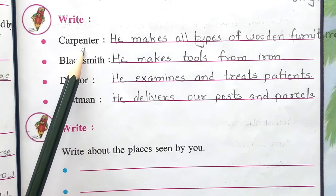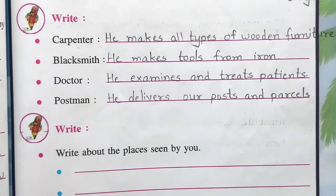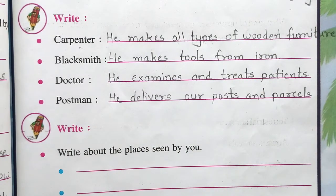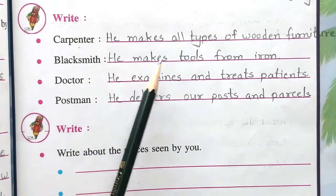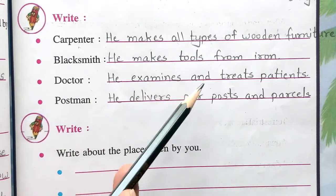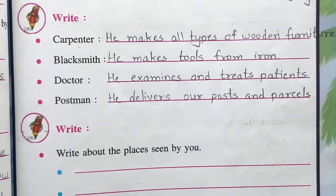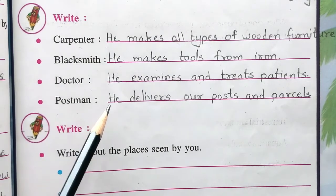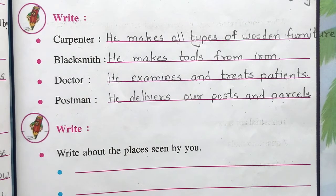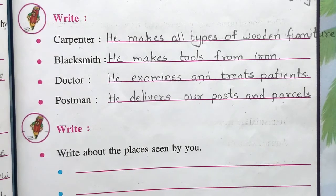Carpenter: he makes all types of wooden furniture. Blacksmith: he makes tools from iron. Doctor: he examines and treats patients. Postman: he delivers our posts and parcels to our home. Write this in your textbook.